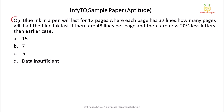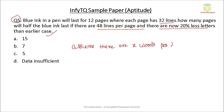Question number five: Blue ink in a pen will last for 12 pages where each page has 32 lines. How many pages will half the blue ink last if there are 48 lines per page and there are 20% fewer letters than earlier? Assume there are X words per line. Total number of words with the original ink is 12 pages × 32 lines × X words per line.